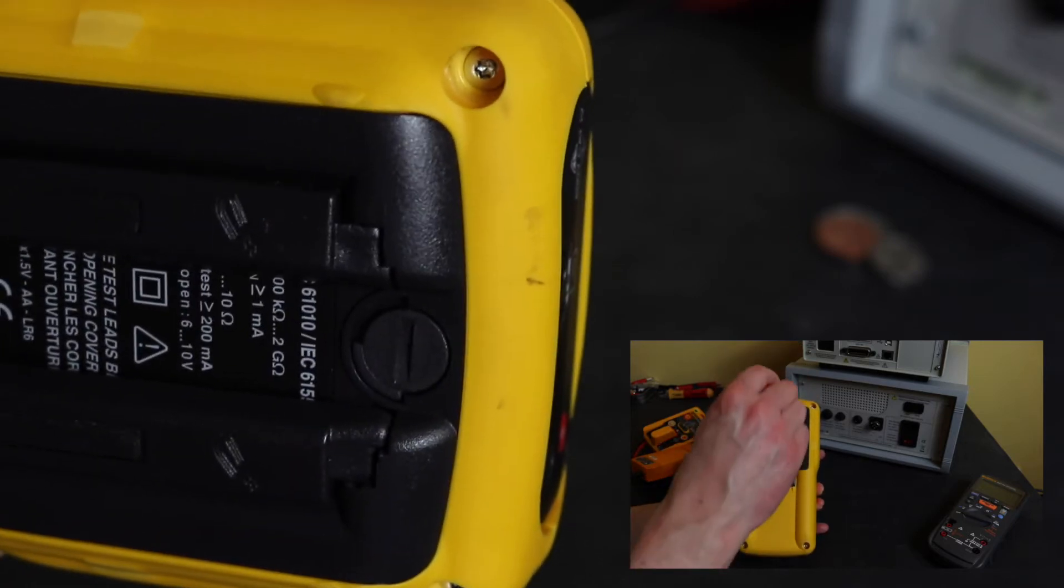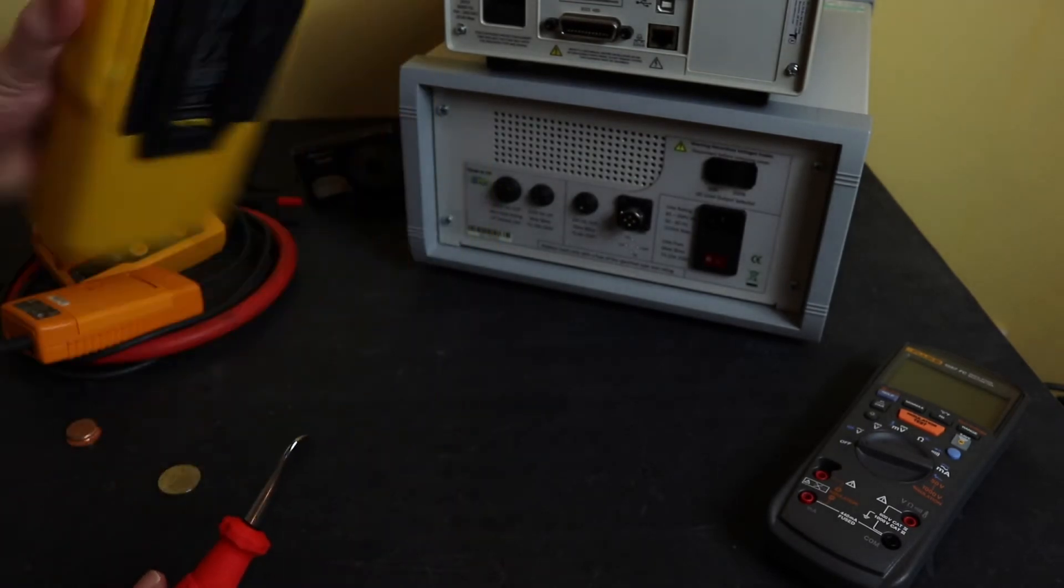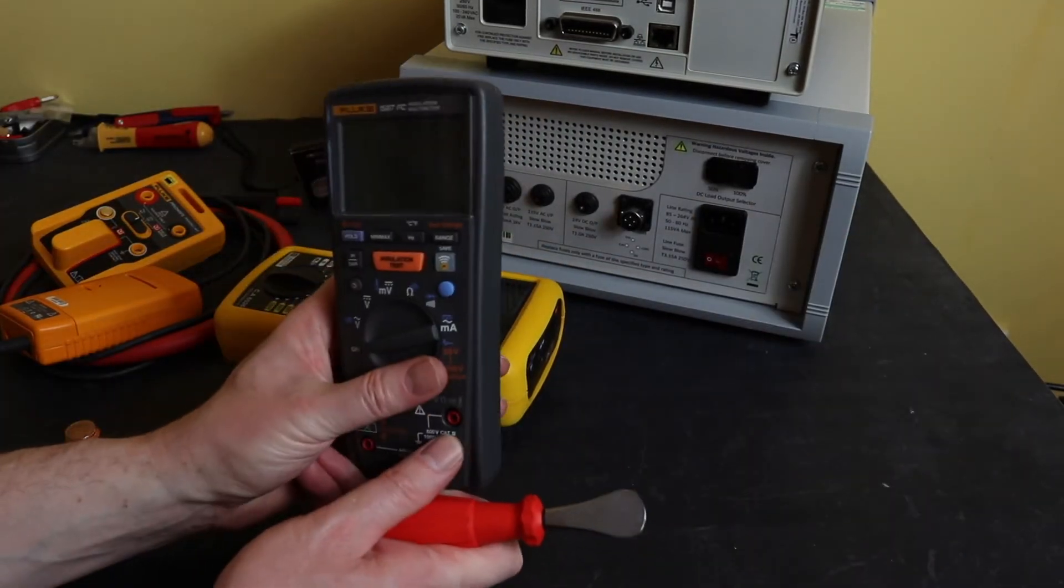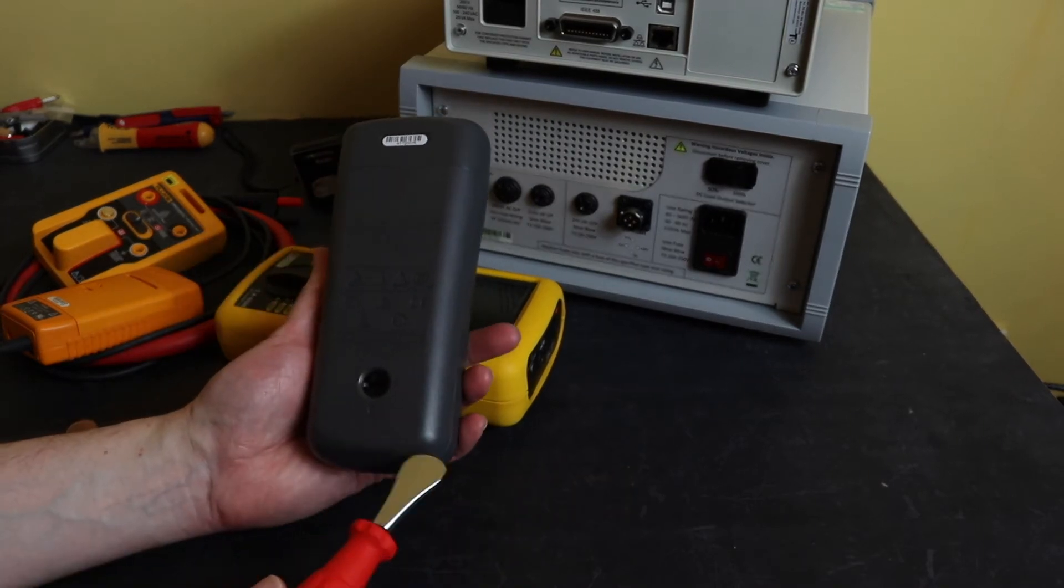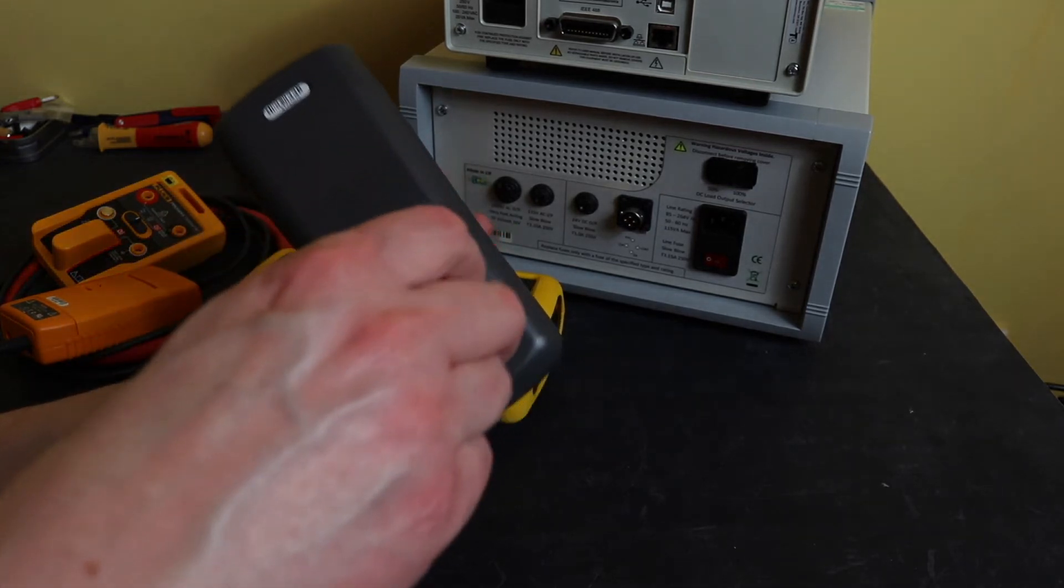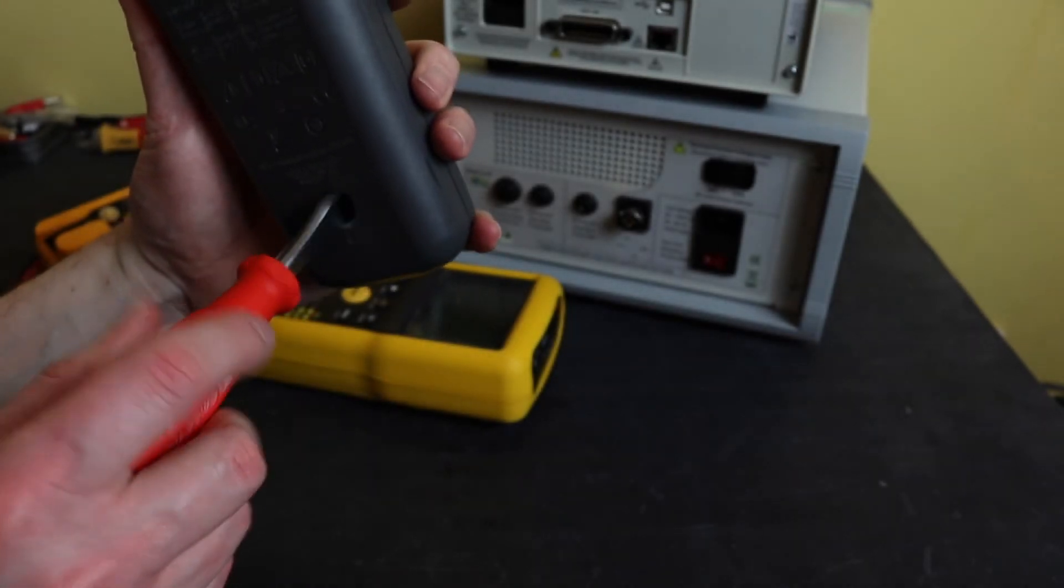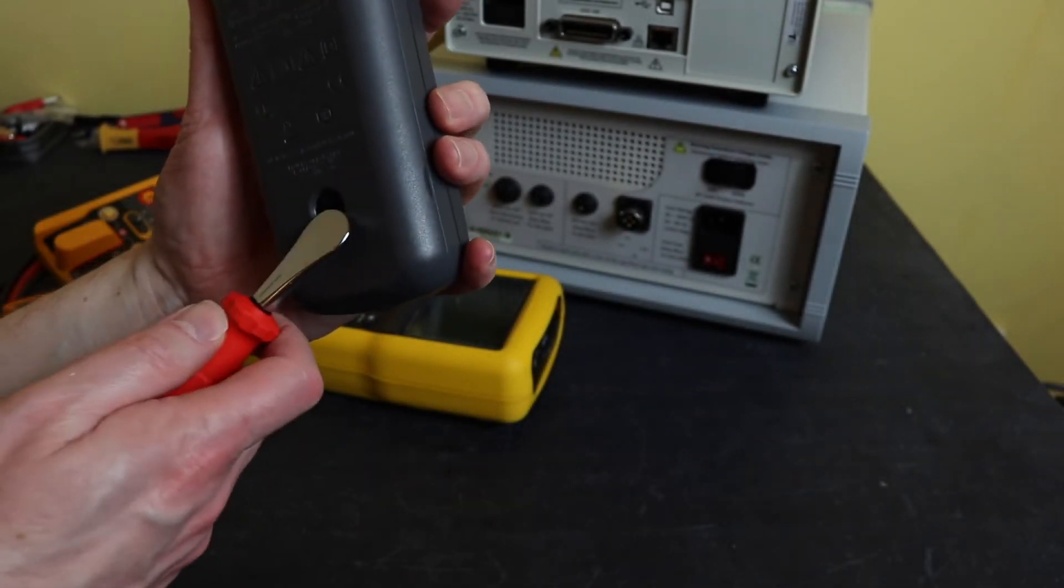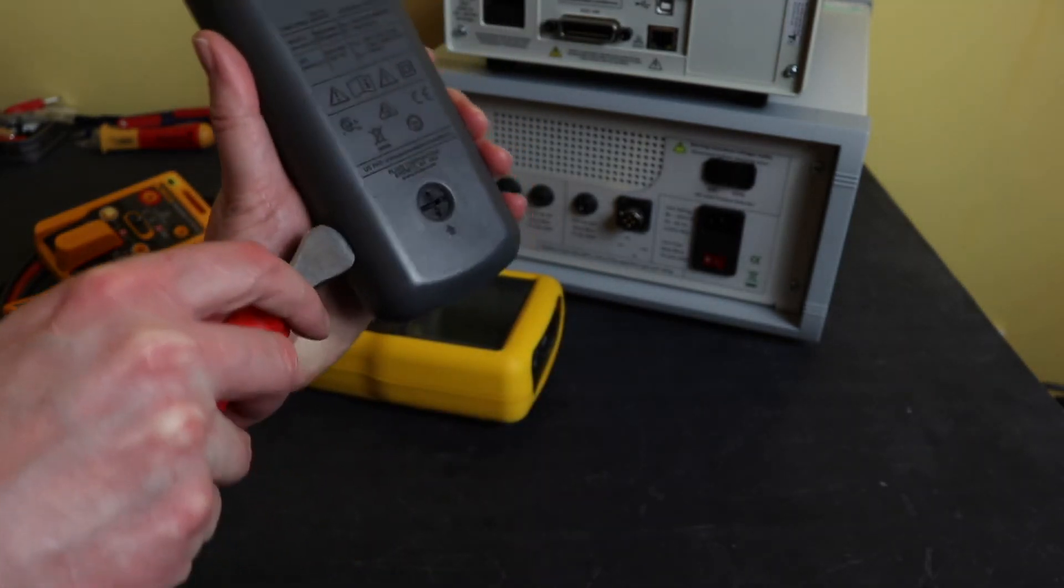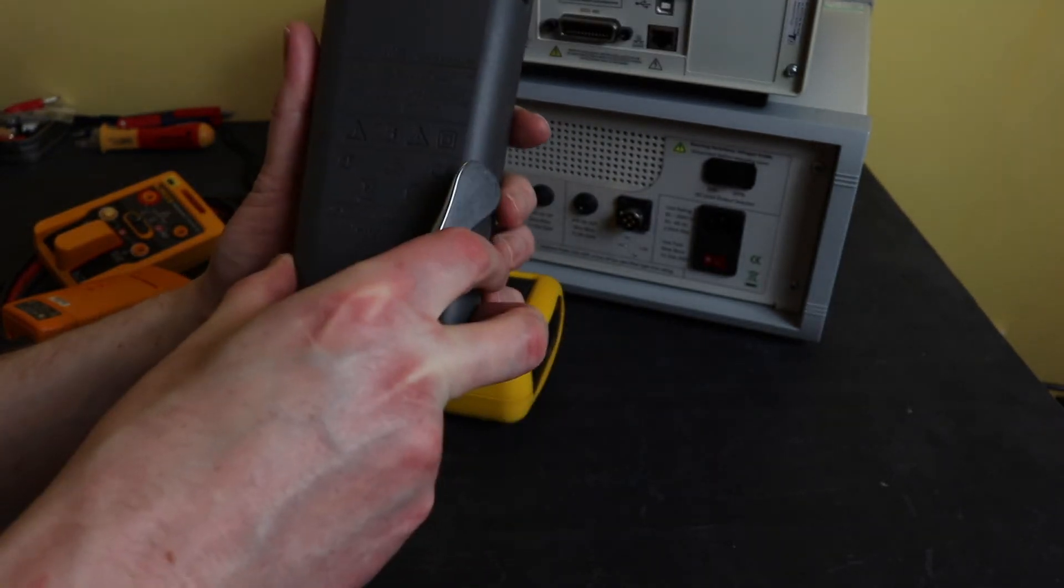It quite happily turns the Chauvin Arnoux. And finally the Fluke 1587 FC. I have to take its cover off to access the battery compartment here. You can see unfortunately it does not want to operate. If I get it in at an angle, I can turn it through 180 and then take it off, but on that occasion a coin is a much better option.